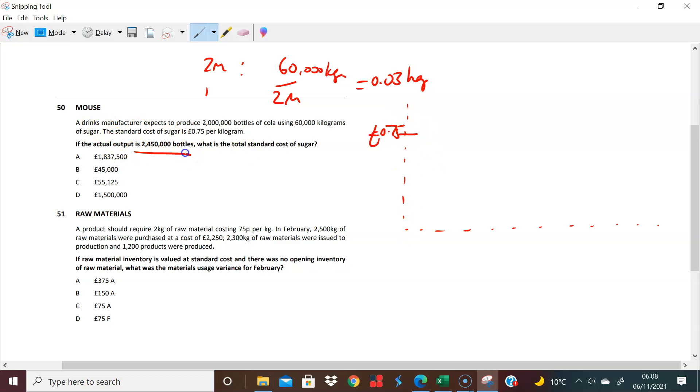I'm making, if actual output is 2.45 million, therefore the number of kilograms I need is 0.03 times 2.45 million. 0.03 times 2.45 million equals 73,500 kilograms.